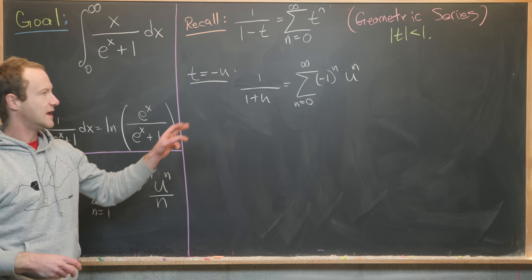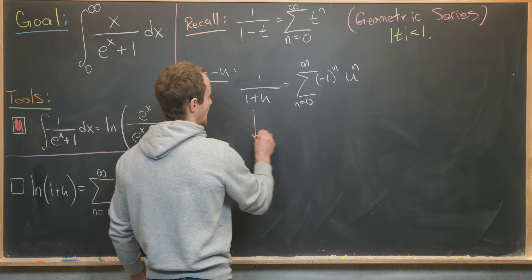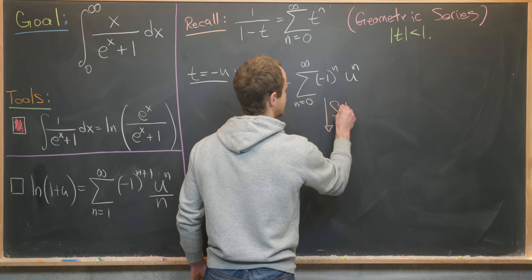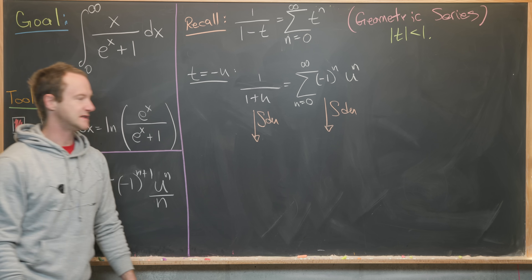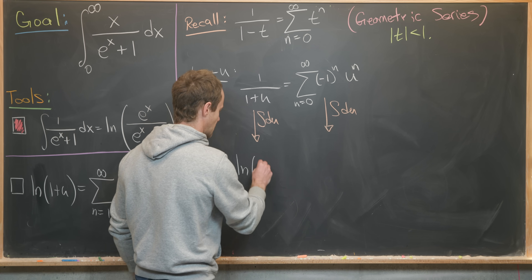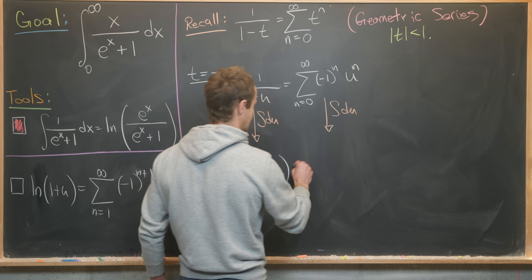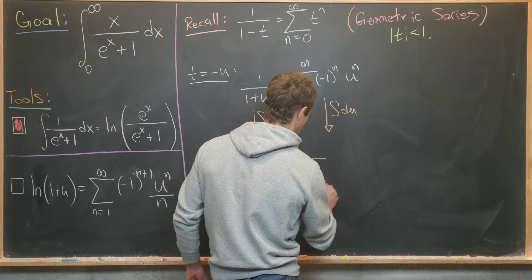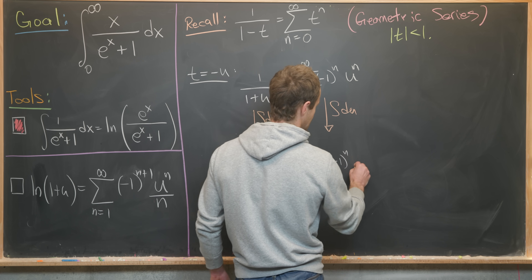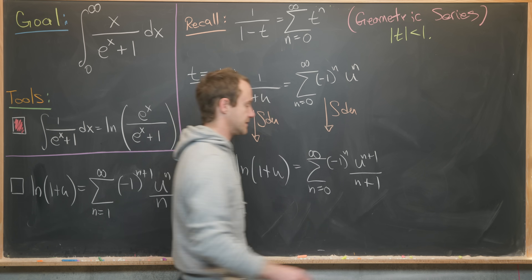Next we take the antiderivative of both sides with respect to u. On the left-hand side that gives us the natural log of one plus u. On the right-hand side that gives us the sum as n goes from zero to infinity of minus one to the n times u to the n plus one, all over n plus one.